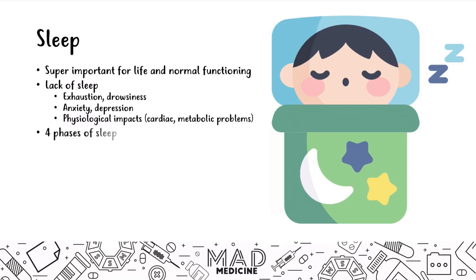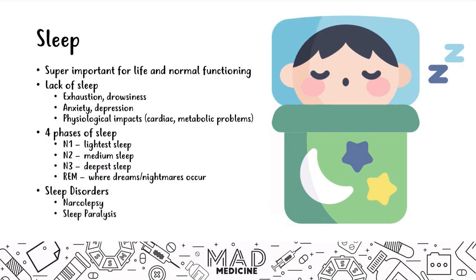There are four main phases of sleep that you need to know. There's N1, N2, N3, and REM sleep. There are four sleep disorders you need to know for step one: narcolepsy, sleep paralysis, sleep terror and enuresis. In this video we're going to discuss the four phases of sleep and each of these sleep disorders.